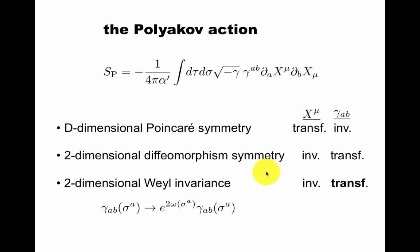So the Polyakov action will be the main object of study. It has d-dimensional Poincaré symmetry, just like Nambu-Goto, under which X transforms and little gamma is invariant.